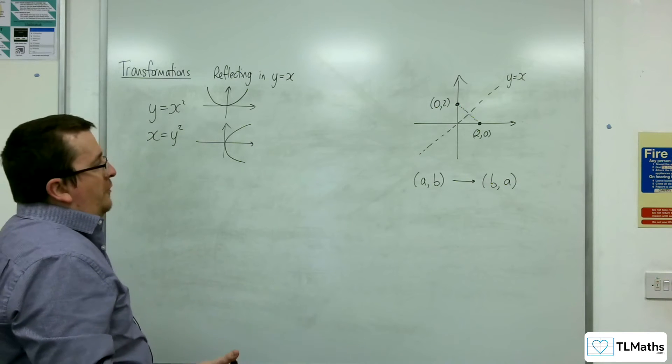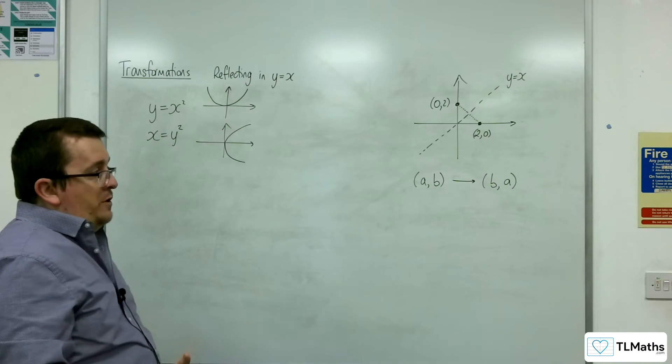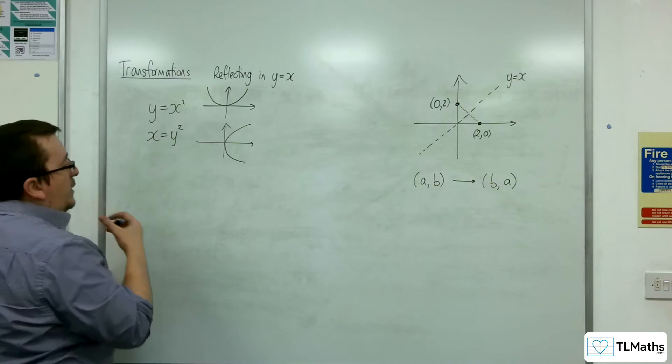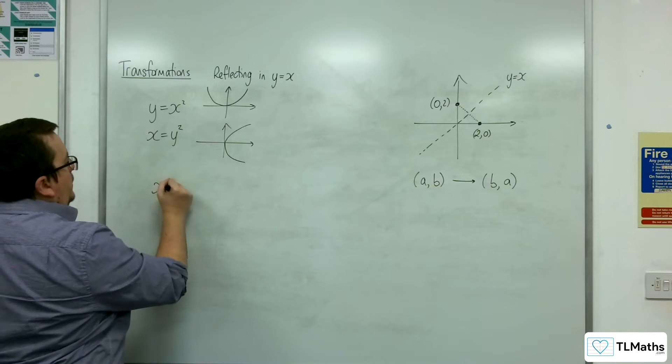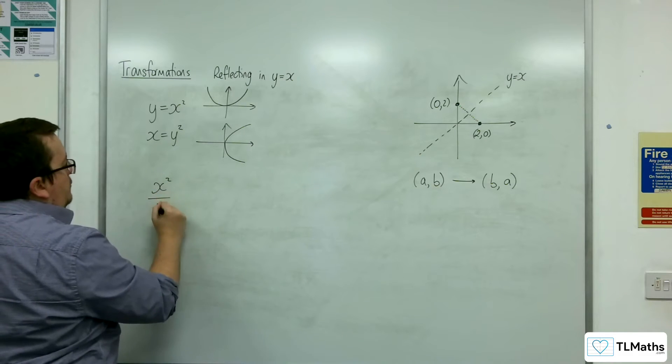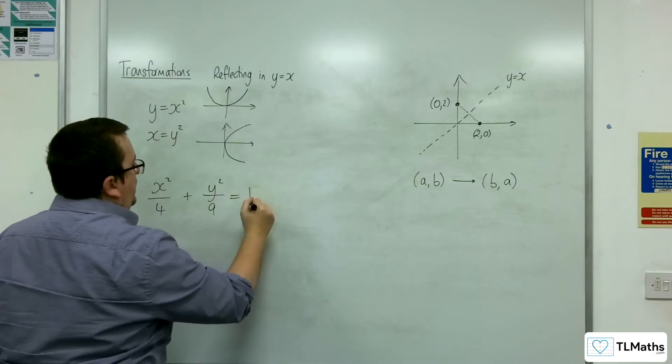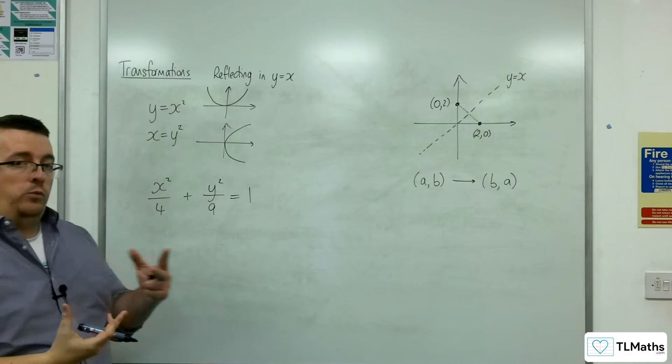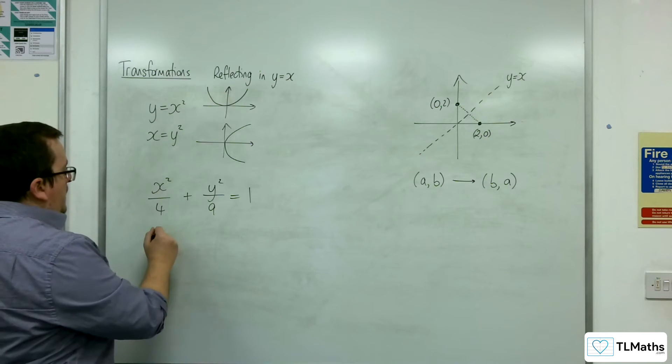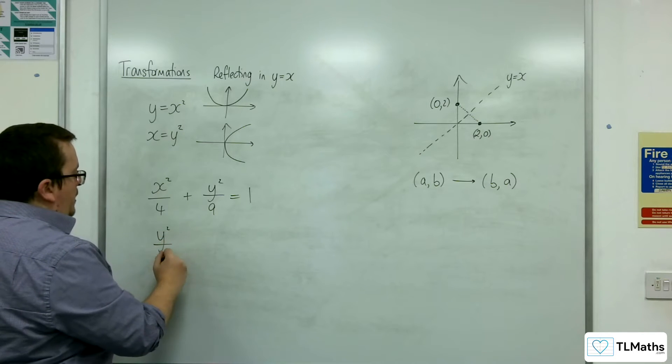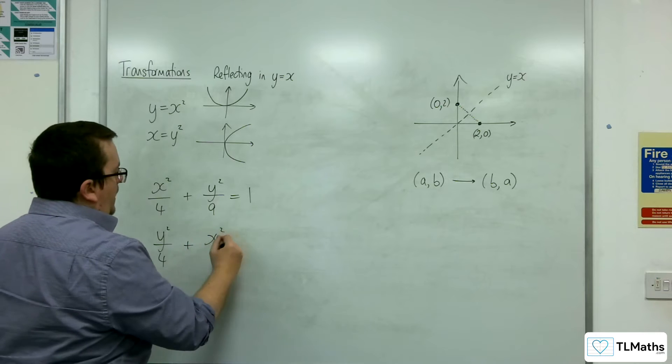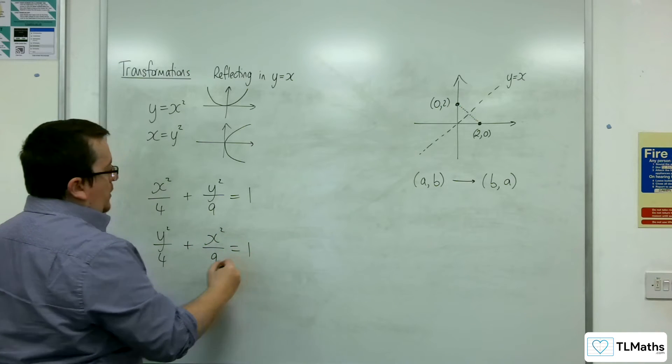An example of an ellipse: if you were looking at an ellipse like x squared over 4 plus y squared over 9 equals 1, if you swap the x's and y's, then you would now have y squared over 4 plus x squared over 9 equals 1.